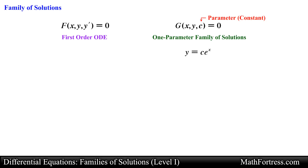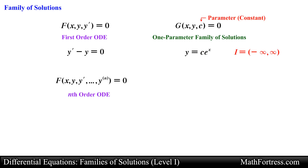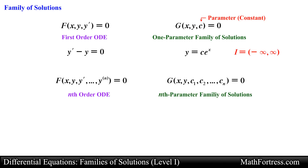For example, the function y equals c times e to the power of x represents a one-parameter family of solutions to the differential equation y prime minus y equals 0 on the interval negative infinity to positive infinity. It's a one-parameter family of solutions because it contains one constant, in this case c. In general, when solving an nth-order differential equation, we seek an n-parameter family of solutions. As a result, a single differential equation can possess an infinite number of solutions corresponding to the unlimited number of choices for the parameters.